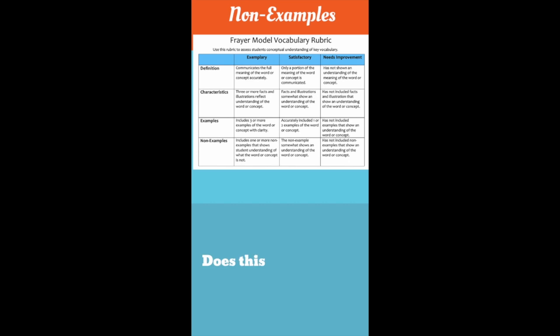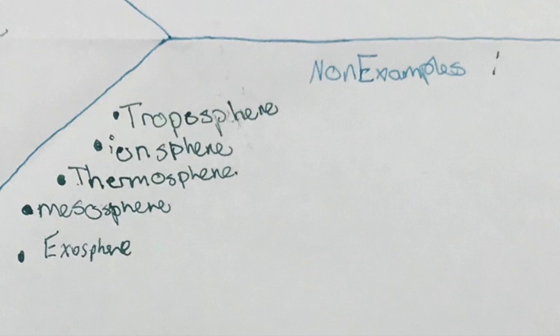In a similar way, look closely at the student's non-examples. Some of the words the student has listed are troposphere, ionosphere, thermosphere. You'll want to make note for the student that ionosphere isn't spelled correctly. But what do you think about the student's listing layers of the atmosphere that are not the stratosphere?